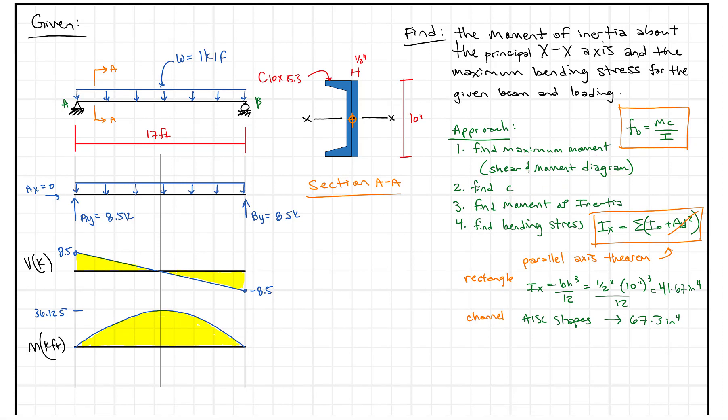What do we do? We have our maximum moment, we found C. C I didn't write it out here but C is just the distance from the principal neutral axis to the farthest point. You'll notice this is going to be five inches for both the rectangle and the channel, it's the same on the top, same on the bottom. This is going to be a symmetric section so C we found.